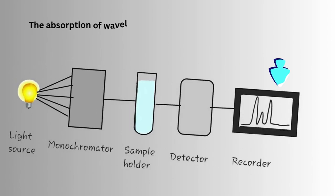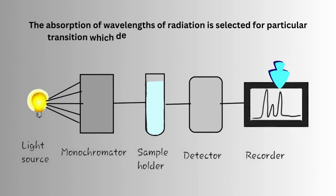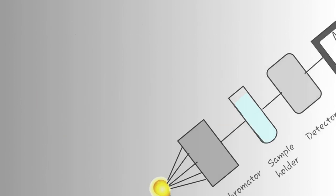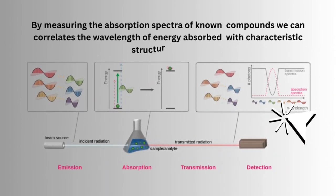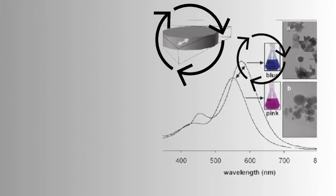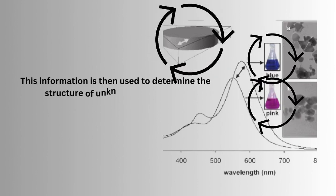The absorption of wavelengths of radiation is selective for a particular transition which depends on the structure of the molecule. By measuring the absorption spectra of known compounds, we can correlate the wavelength of energy absorbed with characteristic structural features. This information is then used to determine the structure of unknown compounds.